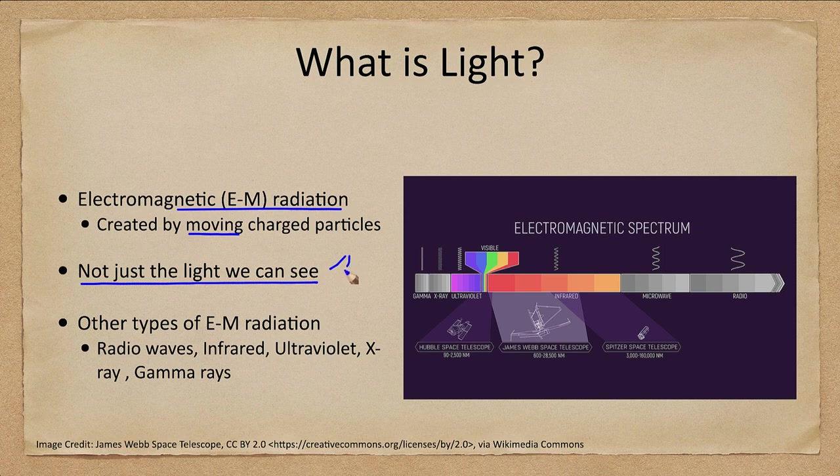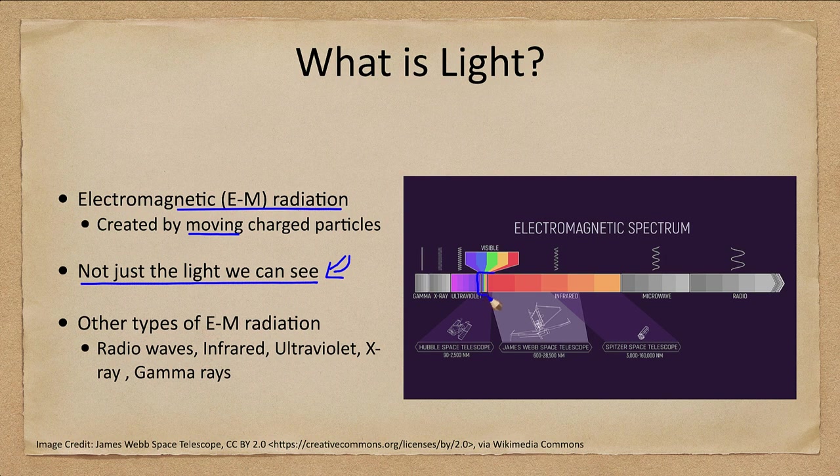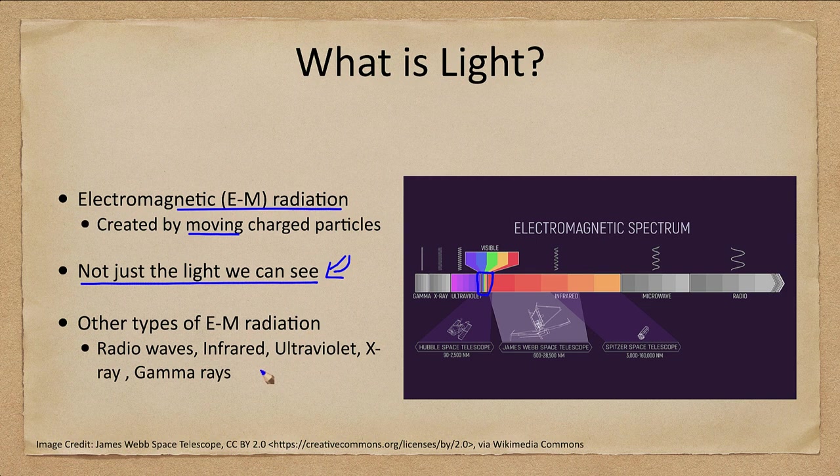It is not just the light that we see. There are lots of other types of electromagnetic radiation. And as you see here, visible light is only a tiny portion of the entire electromagnetic spectrum.